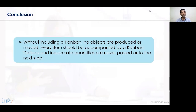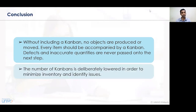In conclusion, without Kanban, no objects are produced or moved, and every item in the business organization should have a Kanban composition. Every item appropriate for a certain Kanban must be assessed — there should be a Kanban in existence, and defects and inaccurate quantities are never passed to the next step. The number of activities in Kanban should be deliberately lowered to minimize inventory and identify associated issues. Kanban needs to be implemented for continuous improvement, scaling up activities, and reduction of waste.